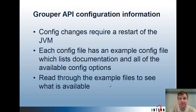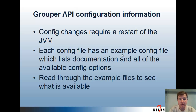If you change a config file, you need to restart the JVM. In the API or the loader, you're just going to kill the process and start it again. In the UI or web service, you're going to bounce the web container. Each config file has an example config which lists the documentation and all the available config options. For grouper.properties, it's grouper.example.properties, and so forth. You can read through the example files to see what's available for that config file.